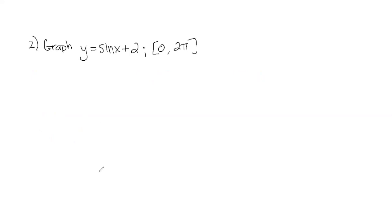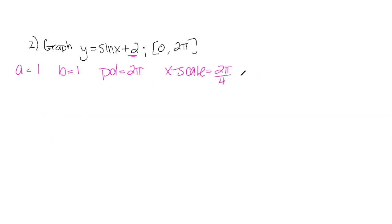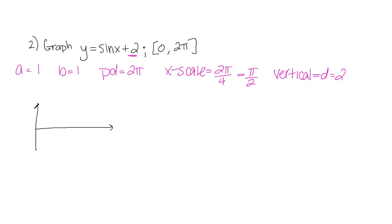Now I have to graph y equals sine x plus two. Looking at this, I know I'm going to take the graph of sine x and shift it up two units — this is the d value. I pull out the same information: a is one, b is one, period is two pi, x-scale is two pi over four which is pi over two, and my vertical shift d is two. I'll use that information to first graph just sine x, then shift it.